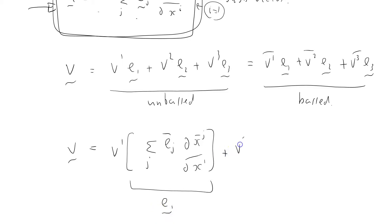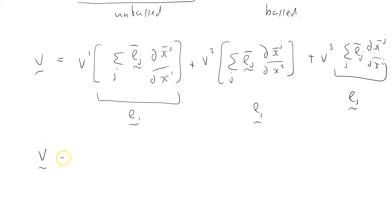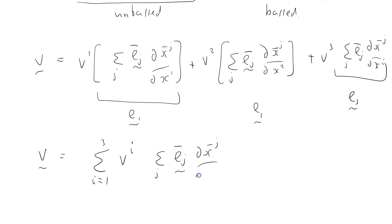Then plus v2 times e2, and I'm going to rewrite e2 in terms of the barred system: sigma over j, e_j bar, dx bar j by dx2. Plus v3 times e3, where e3 is sigma over j, e_j bar, dx bar j by dx i. So I can write v equals sigma over i (1 to 3) of vi times sigma over j, e_j bar, dx bar j by dx i.